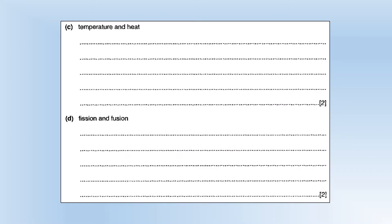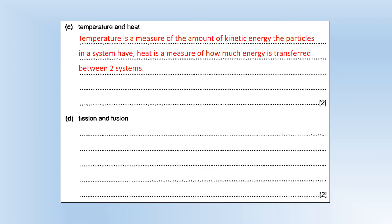Temperature and heat. Temperature is how much kinetic energy the particles in a given system have. Heat is how much energy is transferred between two systems.